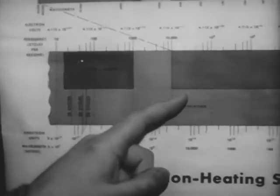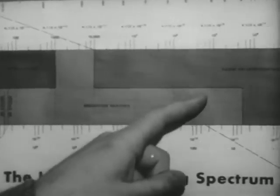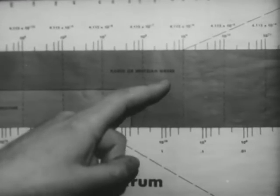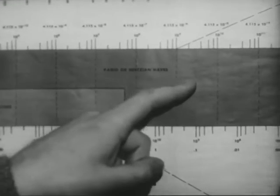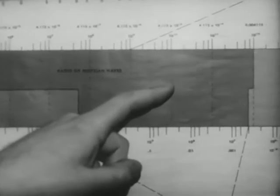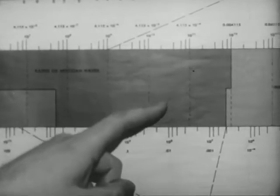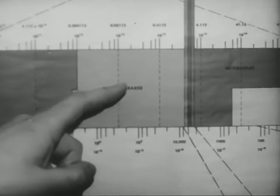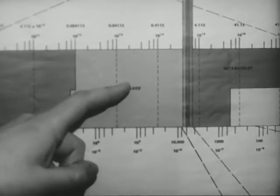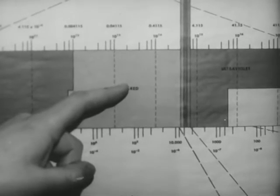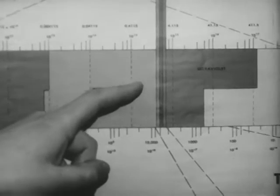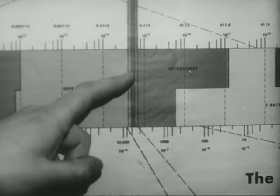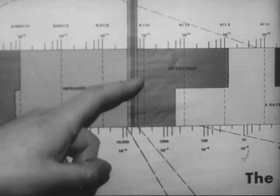We frequently indicate these waves pictorially. Notice the range of wavelengths. Radio waves, about a meter. Microwaves, a hundredth of a meter. Infrared, about 10 to the minus 5 meters. Visible light, 5 times 10 to the minus 7 meters.